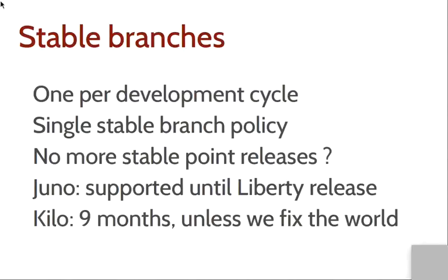What makes the final release different is that we'll have a stable branch out of it, meaning we'll maintain a branch where we can push backports of important bug fixes and vulnerabilities. Only this final release of the Liberty Cycle will be supported like this — if you install intermediary releases, you don't have the additional comfort of a stable branch for critical bug fixes. There will only be one stable branch per development cycle. We also have a single stable branch policy across them, with a team ensuring that only appropriate fixes are merged — we don't break backwards compatibility, don't add new configuration options or features, and don't change the database structure.